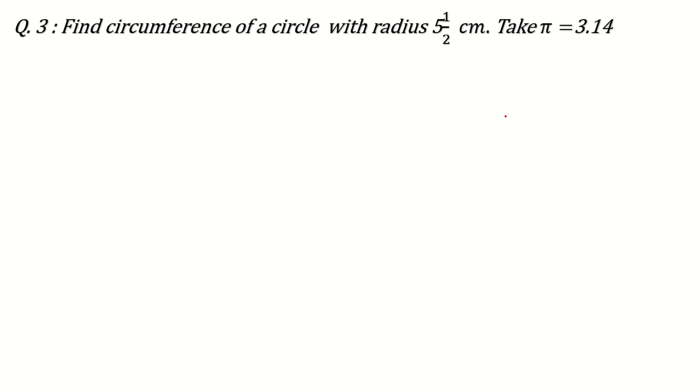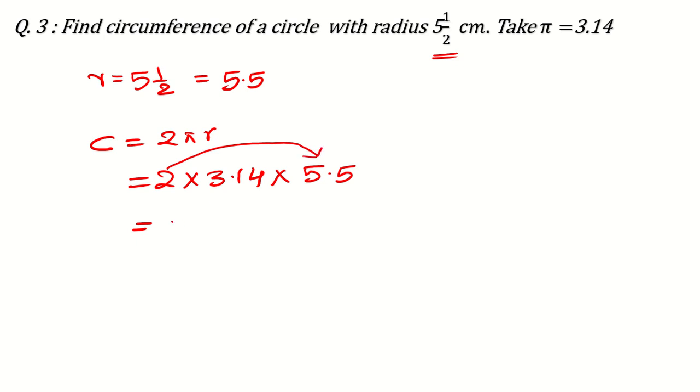Another question can be, find the circumference of a circle with radius 5 and a half. Its radius is 5 and a half. Either you can write it as 5.5 because for half or you can convert it into improper fraction. And then you can solve the question. I am continuing with this. C is equal to 2πr is the formula, means 2 times 3.14 is the value of π and radius is 5.5. If you rearrange the order, then it will be very easy for you to multiply. 2 multiply 5.5 is 11 times 3.14. Why I did like this? Because it is easy to multiply with the 11.